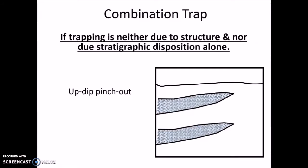Then we have combination traps, where trapping is due to both structural and stratigraphic factors rather than either alone. It normally occurs due to the change of rock types, which commonly happens in a stream environment where sand is deposited along the stream channel surrounded by a flood plain characterized by finer-grained sediment. Sometimes it forms due to lateral change in depositional environments, in which a lens of permeable sand is surrounded by less permeable siltstone and shale, forming a pinch-out trap.